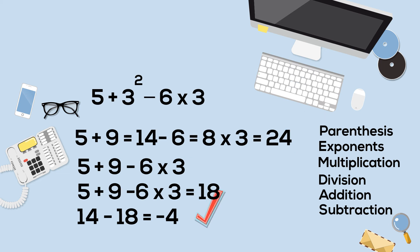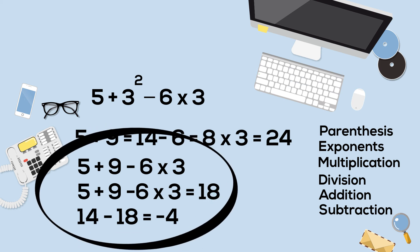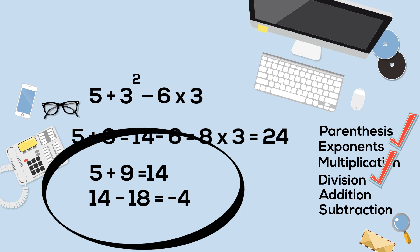The correct answer is negative 4. If you follow the correct order of operations, you will work the exponent first. 3 squared is 9, then multiplication, 6 times 3 equals 18. Next you go to addition, 5 plus 9 is 14, and then finally subtraction, 14 minus 18 is negative 4. So that's how you use the order of operations to evaluate expressions.